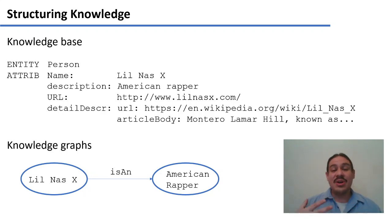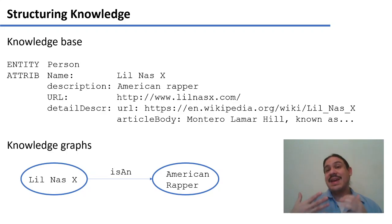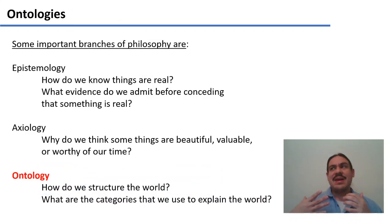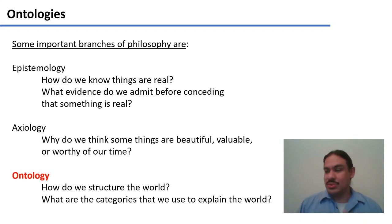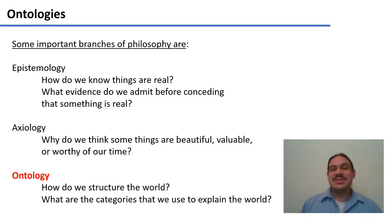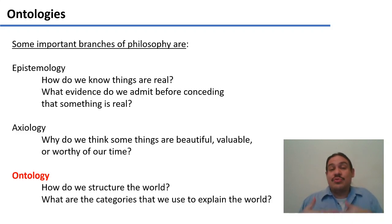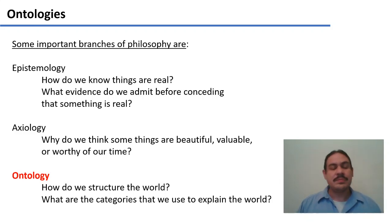In the case of knowledge graphs, attributes are dictated by our text, but in the case of a knowledge base — and also databases — these attributes have to be planned ahead of time. We need to think about how we're going to structure our information and what questions actually matter to describe a person or a place. We call this ontology. This is a branch of philosophy — you might have heard of epistemology, for example, which is how we know that things are real and what kind of evidence we admit before we concede that something is real or not.